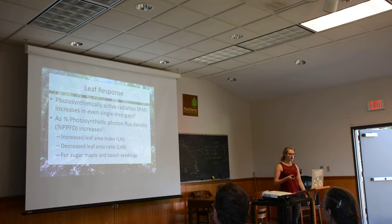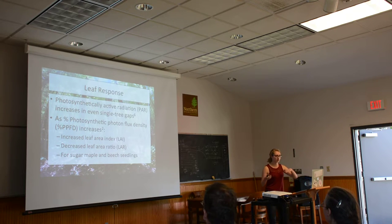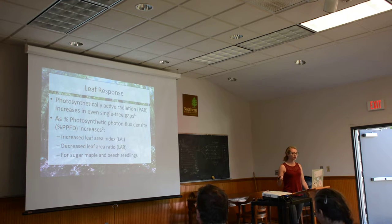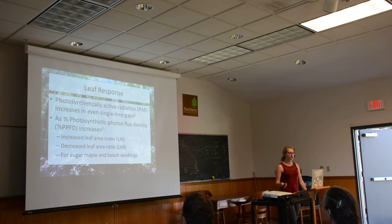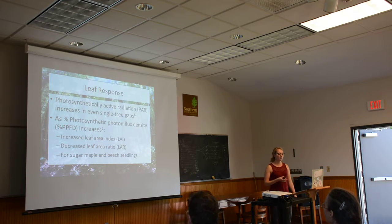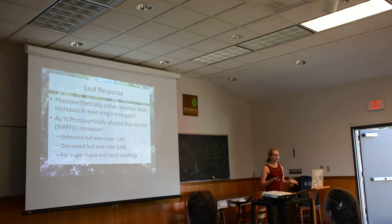In terms of leaf response, when you have even a very small gap, photosynthetically active radiation — basically just the light coming in that's producing photosynthesis — will increase. As percent photosynthetic photon flux density increases, we tend to see increased leaf area indices, so the leaves are getting bigger in relation to the amount of ground they're covering. We see decreased leaf area ratio, so the amount of those leaves devoted to producing photosynthesis increases. The leaves are getting better and can devote more of their energy to photosynthesis.